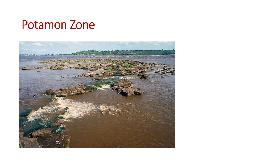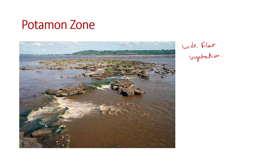The second zone is the Potamon zone — the flat, slow-moving lower course of the river. The speed of water is less and currents are relatively smooth. It is characterized by a wide, flat, mud bottom with rooted or floating vegetation. The environment of the Potamon zone is more complex than the Rhithron zone, which is always well-oxygenated due to constantly flowing water. The Potamon zone shows further zonation both longitudinally and laterally. Longitudinally there is a replication of different habitats associated with twisted channels.